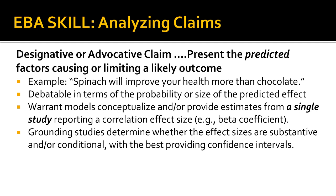Now that you have an understanding of the three types of evidence-based claims — definitive, designative, and advocative — you are ready to begin practicing application of your knowledge in identifying claims in your readings. You should identify the type of claim that is made. Try to draw a diagram that connects a factor to its predicted indicators for definitive claims, and draw links between factors to diagram the causal paths of a designative claim.